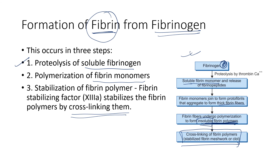After that, the process of fibrinolysis we will discuss in the next video. This is the most important part — blood coagulation and definitive hemostasis. I hope you have understood the three steps of definitive hemostasis: clotting factors, the pathways, and the clot formation. If you found this helpful, like and share. Thank you.